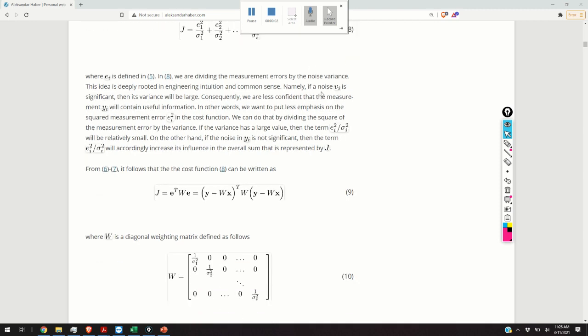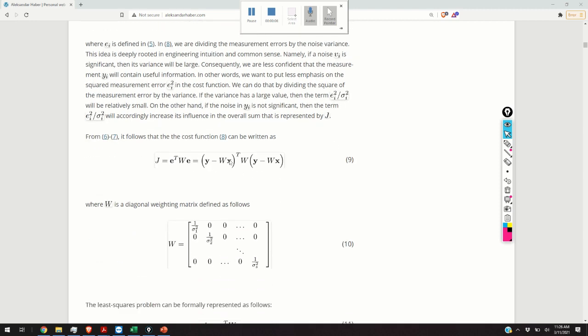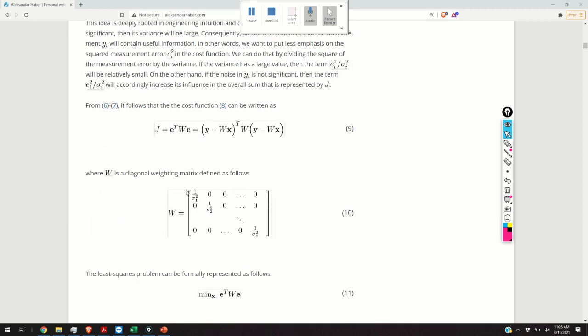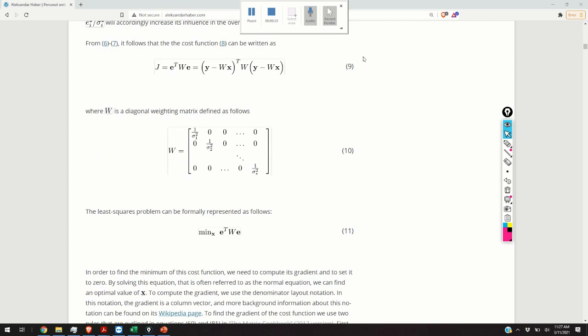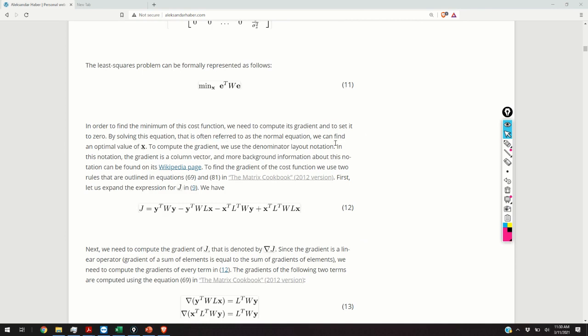The equation 8 can be written in the compact form given by the equation 9, where the matrix W will collect all the weights. So, the W will be diagonal matrix, and every element will be 1 over the variance of the corresponding measurement noise. So, once we have written the cost function by equation 9, we can simply state the least squares problem in mathematical form, and the mathematical form is given by the equation 11. So, we are minimizing, with respect to x, the weighted error, or the 2 norm, the weighted 2 norm of the error.